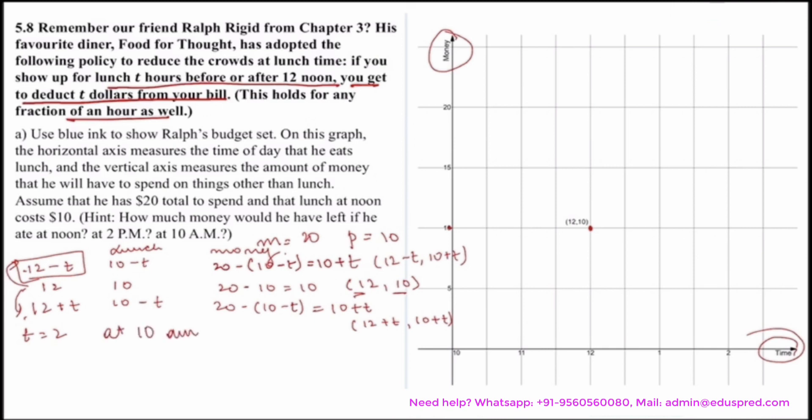So at 10 AM, which is this particular scenario, my point would be of the form (12 minus t, 10 plus t). Now t is equal to 2 at 10 AM. That means my point would be 12 minus 2, which is 10, and 10 plus 2, which is 12. So this is (10, 12), which will lie here.